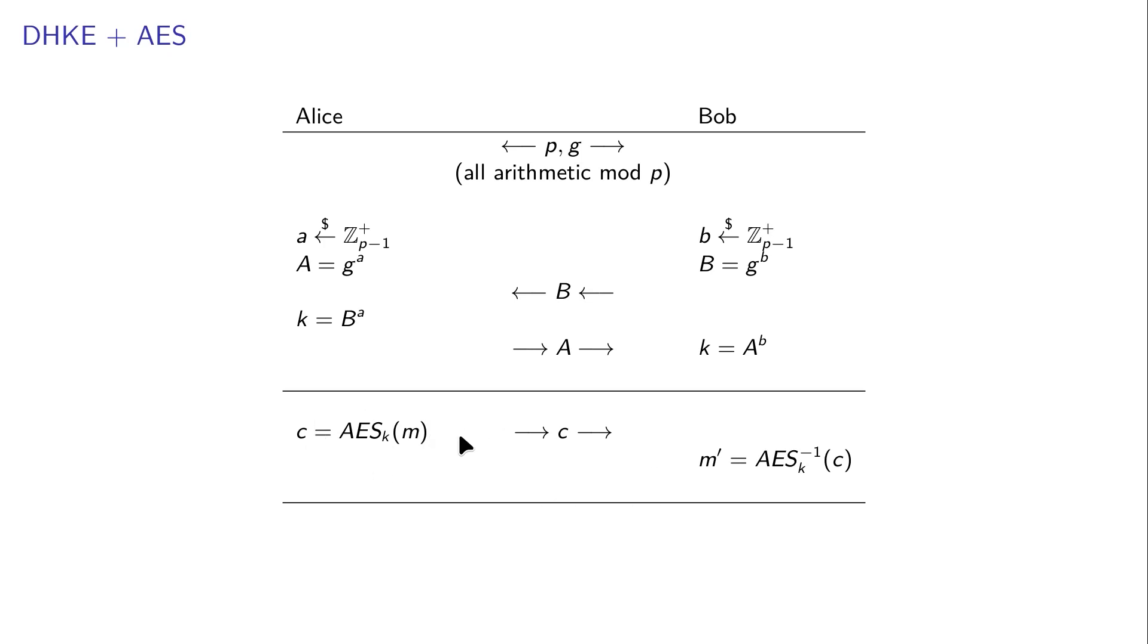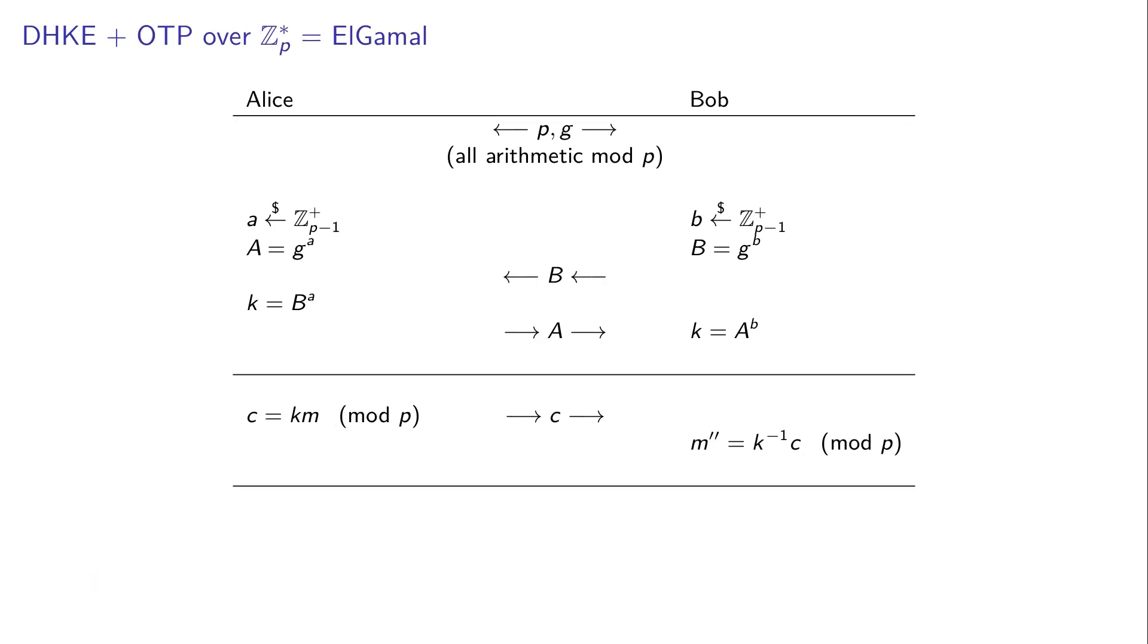But here's the interesting thing: though this line here is now a conceptual separation, Alice actually can send A and C in the same message. So even though it's conceptually two messages, it can be combined into one message.